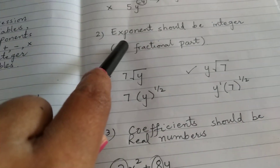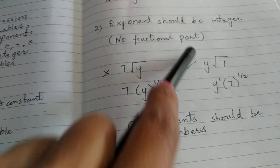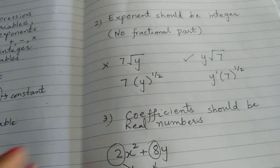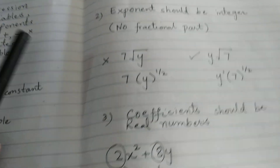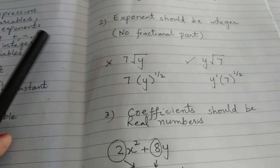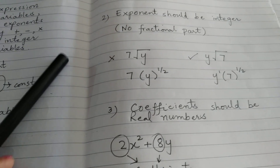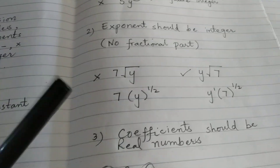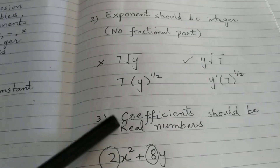In both cases there is a difference. The exponent should be an integer with no fractional part. The exponent should be an integer, and a fractional exponent on the variable makes it non-polynomial.